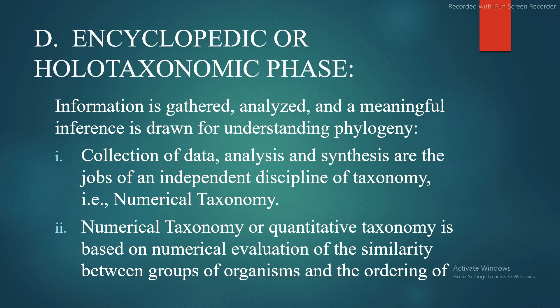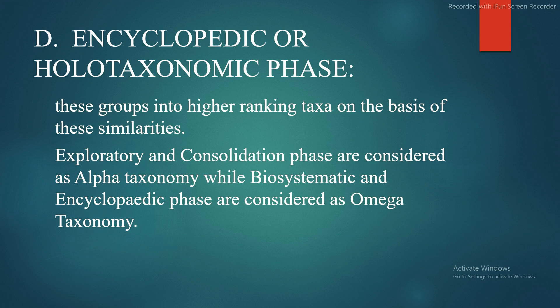Fourth is the encyclopedic or holotaxonomic phase. Information is gathered, analyzed, and meaningful inferences are drawn for understanding phylogeny. Collection of data, analysis, and synthesis are the jobs of independent disciplines of taxonomy — for example, numerical taxonomy. Numerical taxonomy, or quantitative taxonomy, is based on numerical evaluation of similarity between groups of organisms and ordering these groups into higher-ranking taxa on the basis of those similarities. Exploratory and consolidation phases are considered alpha taxonomy, while the biosystematic and encyclopedic phases are considered omega taxonomy.